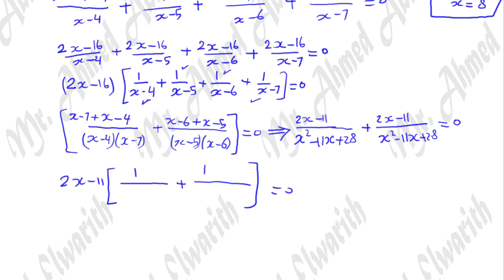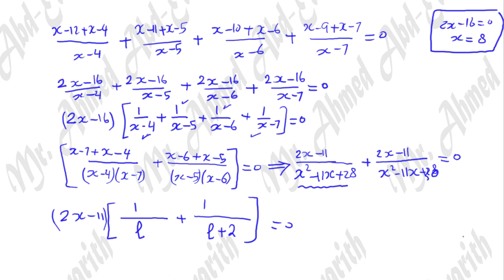Let L equal x squared minus 11x plus 28. Then the other denominator equals L plus 2, since x squared minus 11x plus 28 plus 2 equals 30. The product of two factors equals zero, so one of them equals zero. Thus 2x minus 11 equals 0, giving x equals 11 over 2 as the second value of x satisfying the equation.